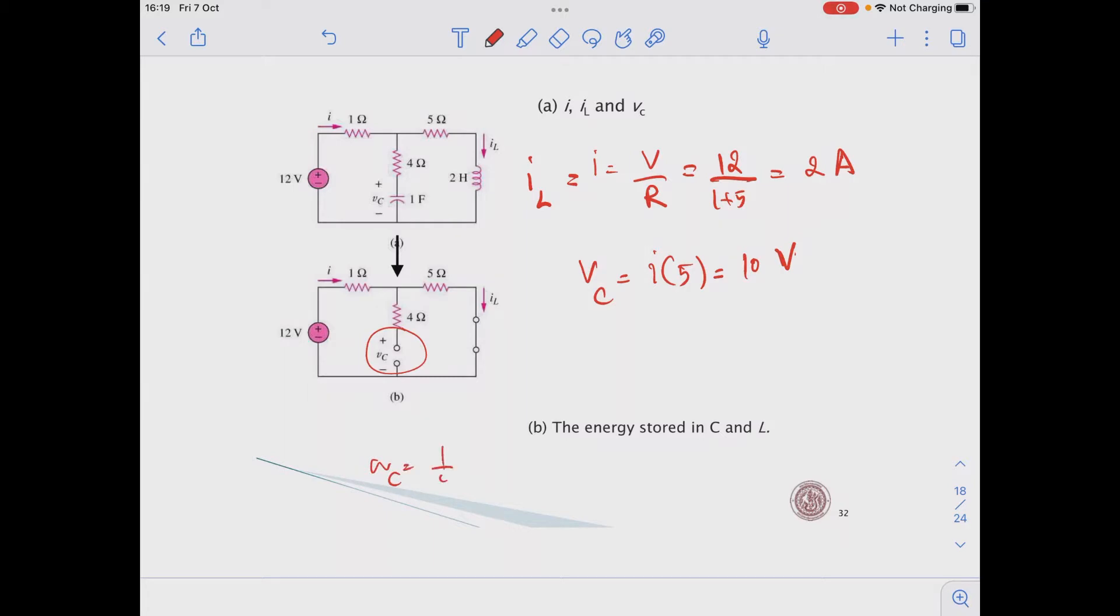Then WC is equal to 1 over 2 C VC squared, which is equal to 1 over 2 multiplied by 1. VC squared is 10, so we have 50 joules here.